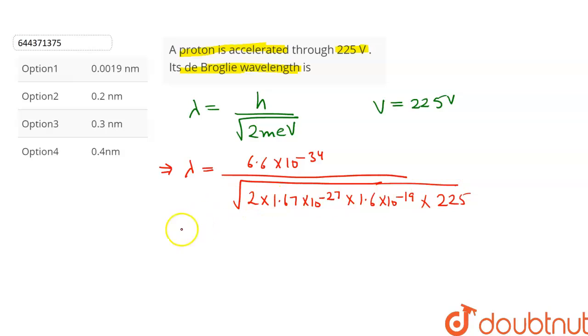Now let's solve this equation. After solving this equation, we get lambda is equal to 0.19 × 10^-11 meters. This can also be written as lambda is equal to 0.0019 nanometer.